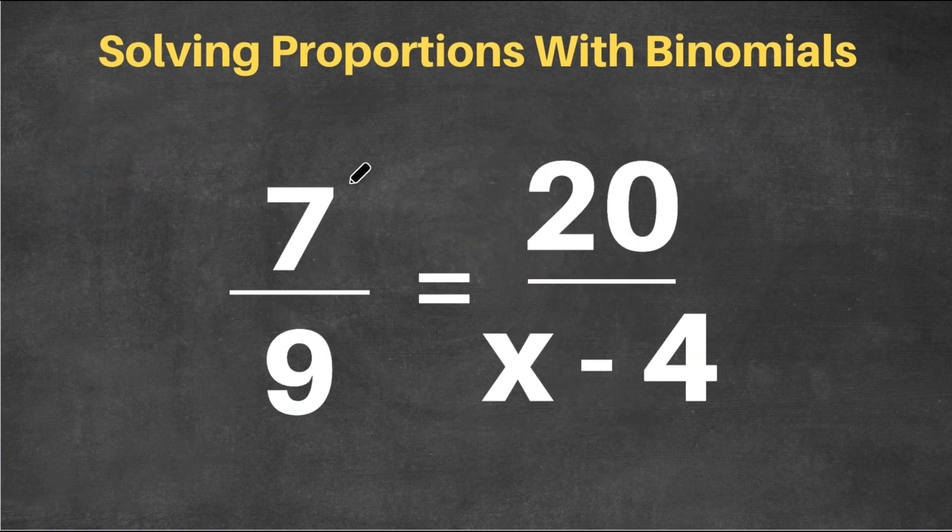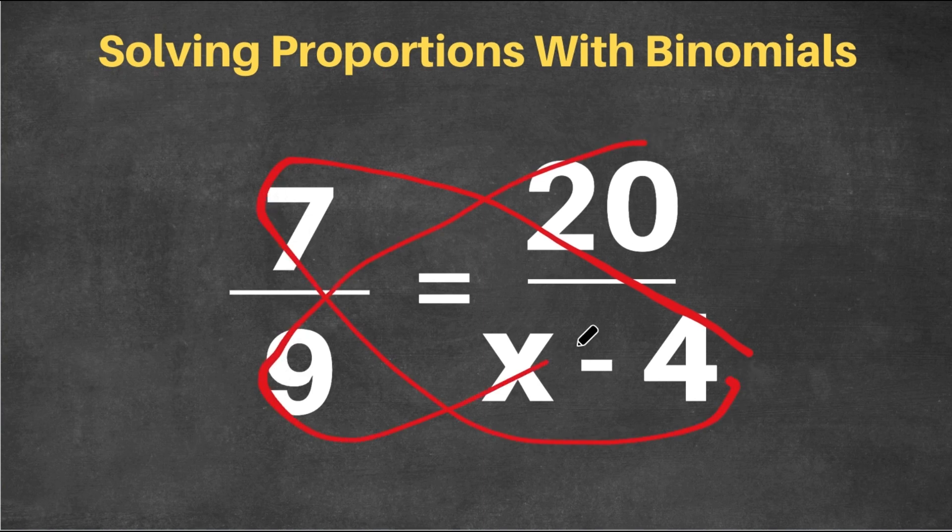All right. So now we have the problem 7 over 9 equals 20 over x minus 4. And we're going to use the same concept here. We're going to cross-multiply. So we're going to do 7 times x minus 4 and 9 times 20.